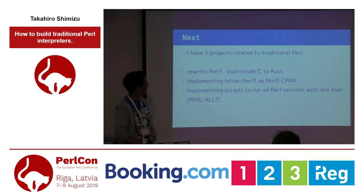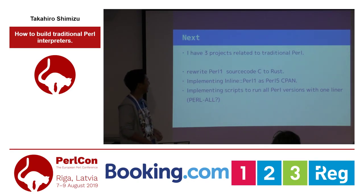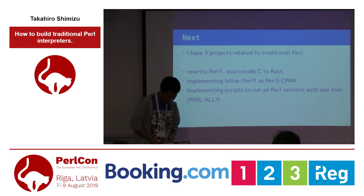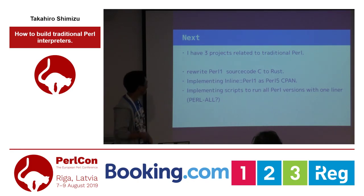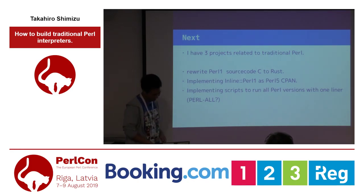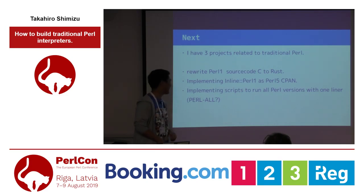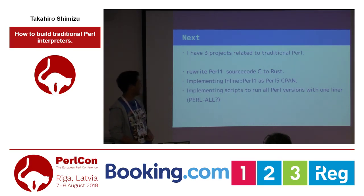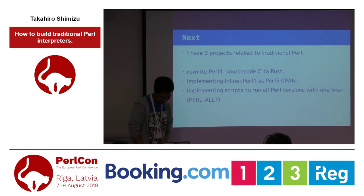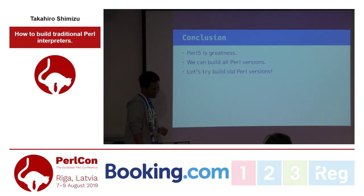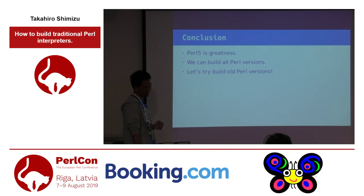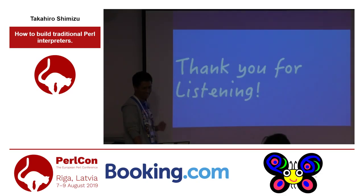I have three future projects related to traditional Perl: first, rewriting Perl 1's first code from C to Rust; second, implementing inline Perl 1 into Perl 5; and third, implementing a script to run all Perl versions with one runner — 'perl-all.' Conclusion: Perl 5 is the greatest. We can build all Perl versions. Let's try to build all Perl versions. Thank you for listening.